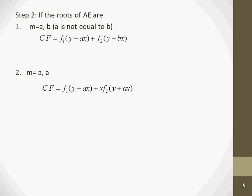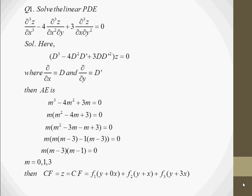If the roots of the auxiliary equation are repeated — for example, m equal to a, a — then the complementary function will be f1(y + ax) + x·f2(y + ax).